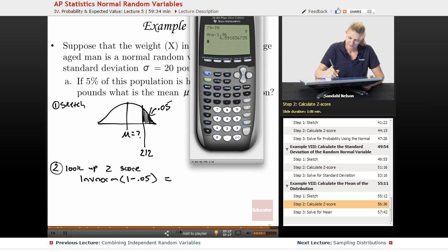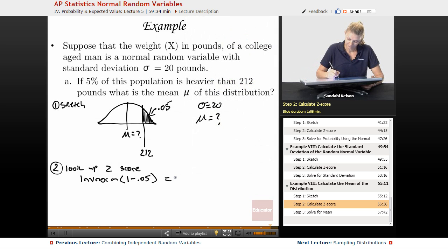Okay, so we go 2nd VARS, inverse norm, and we put in 1 minus 0.05, and that is 1.64. And if this was a multiple choice test, you might want to have more decimal points so you can discern between two answers, but for here two decimal points is fine.